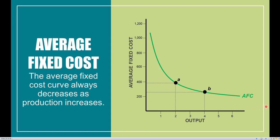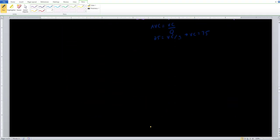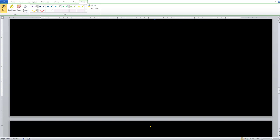It will never equal zero — it's essentially going to be asymptotic as it gets close to the output axis. The special name we give to this continuously downward sloping line — and this is the only time we'll see a continuously downward sloping line in any of these cost curves — is the spreading effect.